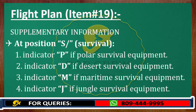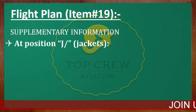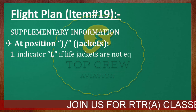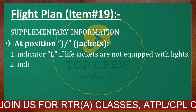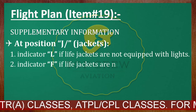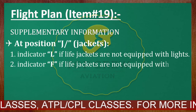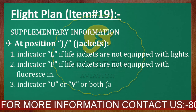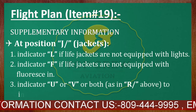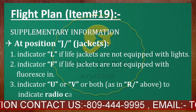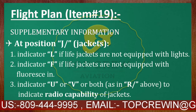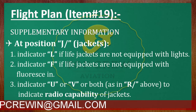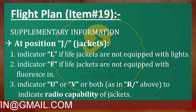The same goes for jackets. If we do not have jackets we cross all four options. If we do have jackets, we mention J and then indicate what kind of facility that particular jacket has. We cross whatever we do not have — for example, if we have light jackets we cross the other three. The same procedure applies for emergency radio, survival equipment, and jackets.